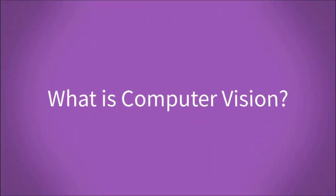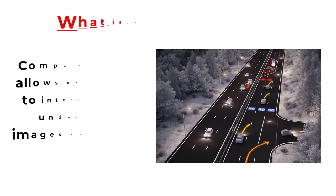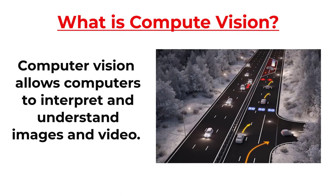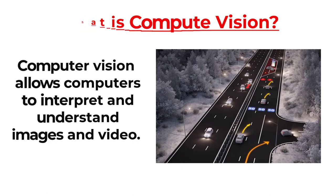Let's start with what computer vision is. Computer vision is the field of AI that allows computers to interpret and understand images and video. It's a rapidly growing field that has already had a huge impact on many aspects of our lives.